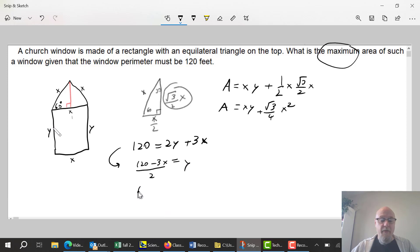That's what I'm going to substitute in for Y. So now the area is equal to X times Y, which is 60 minus 3 over 2 X, plus root 3 over 4 X squared. Now the area function is in terms of one variable - I'm set.